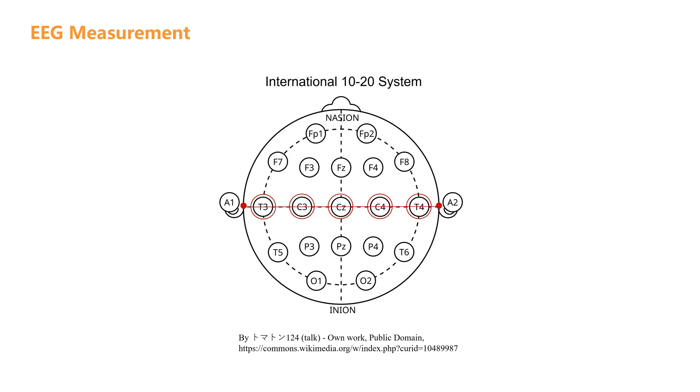T3, T4, C3, and C4. The distance from T3 and T4 to the preauricular points each accounts for 10% of the total length of this line. The remaining points are spaced 20% apart along the rest of the line.